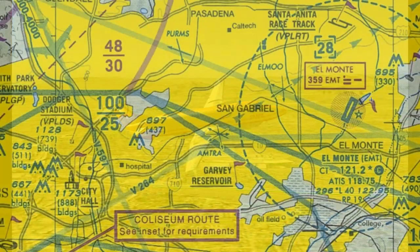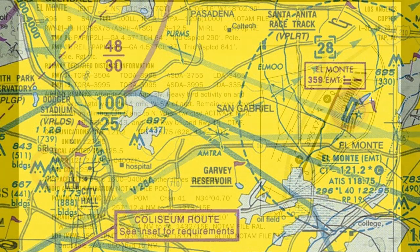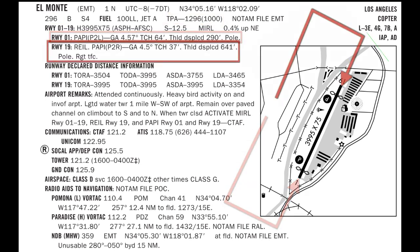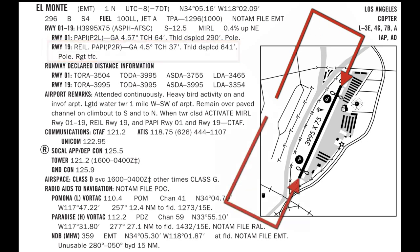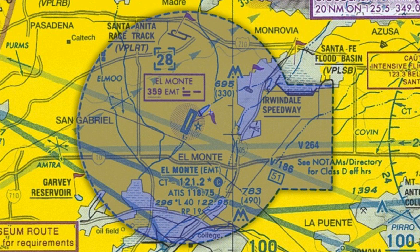For the controlled airport departure procedures, I will use El Monte Airport, KEMT, for this tutorial. El Monte Airport is located in Southern California, 11 miles east of downtown Los Angeles. Its runways are Runway 19 and Runway 1, 4,000 feet long and 75 feet wide. Its elevation is about 300 feet, its traffic pattern altitude is 1,300 feet or 1,000 feet AGL. It has a left traffic pattern for Runway 1 and a right traffic pattern for Runway 19, so both traffic patterns are located west of the airport. El Monte has a Class Delta airspace that extends up to 2,800 feet.